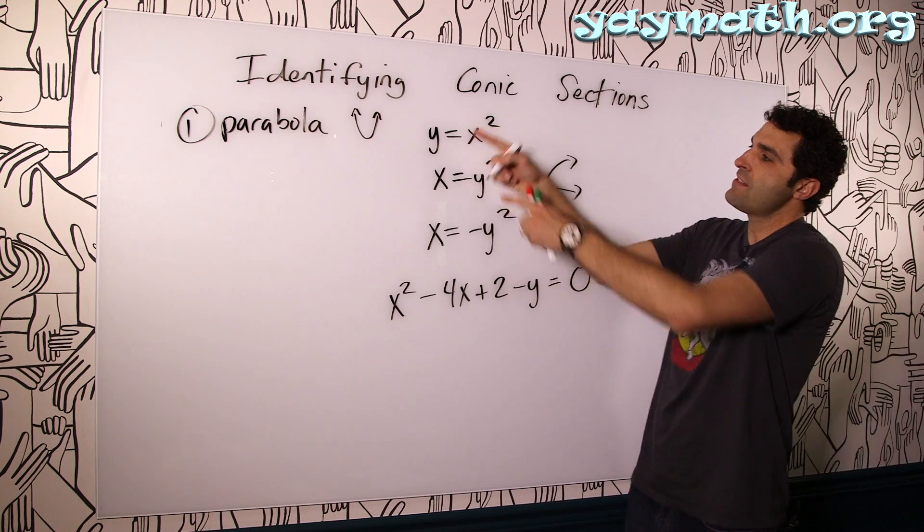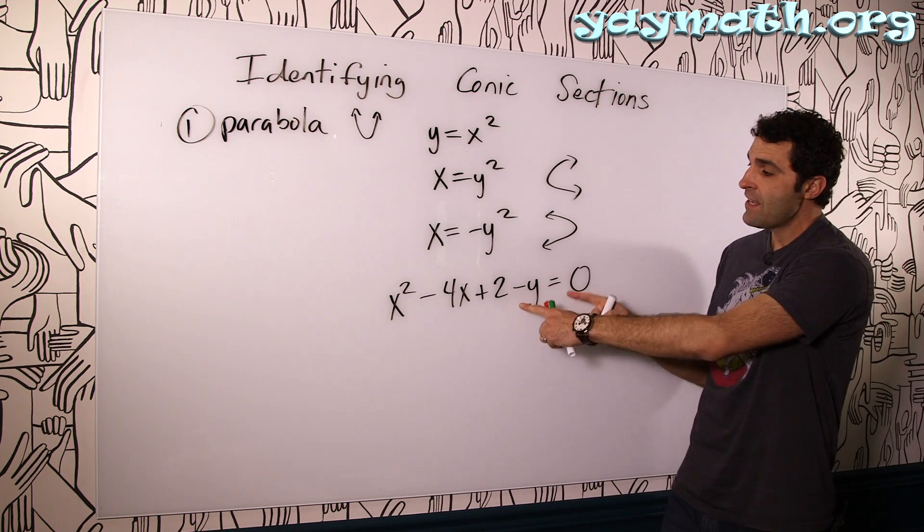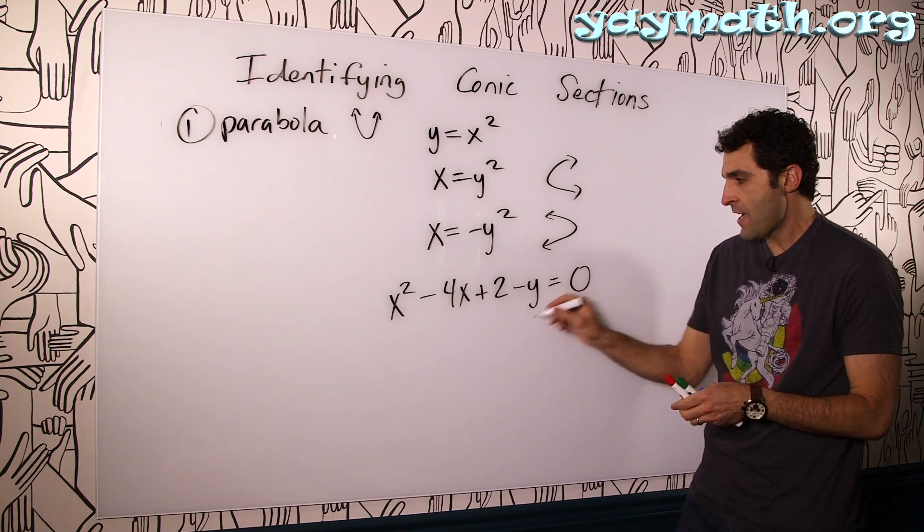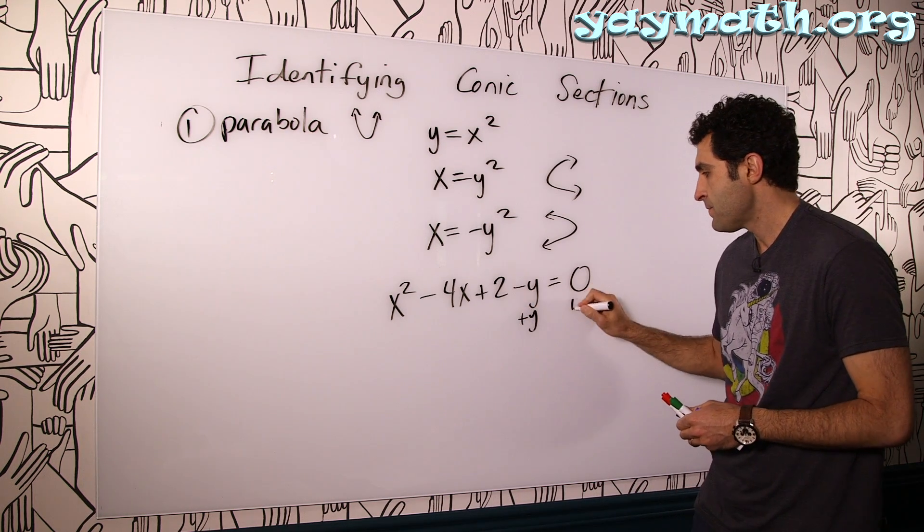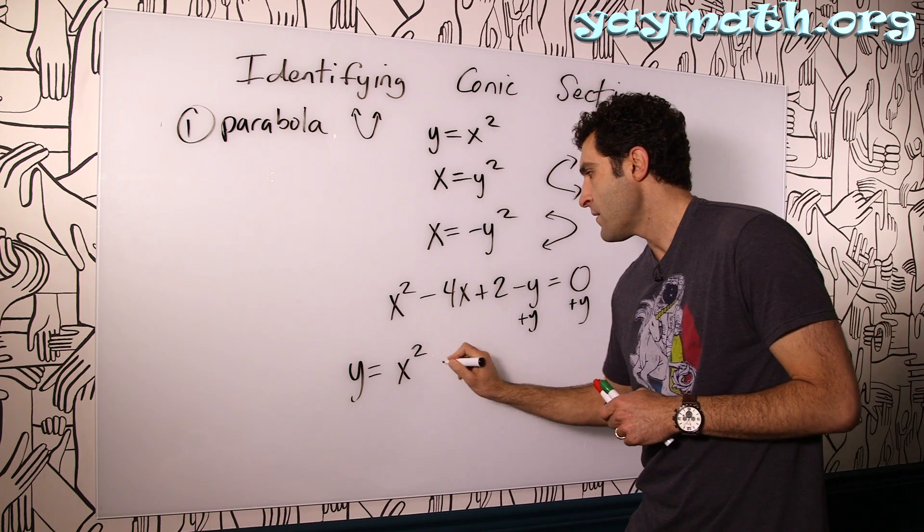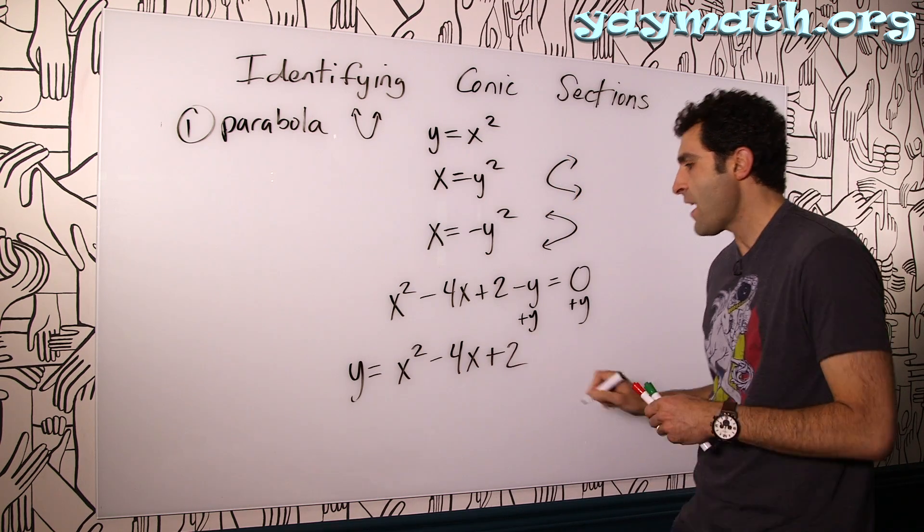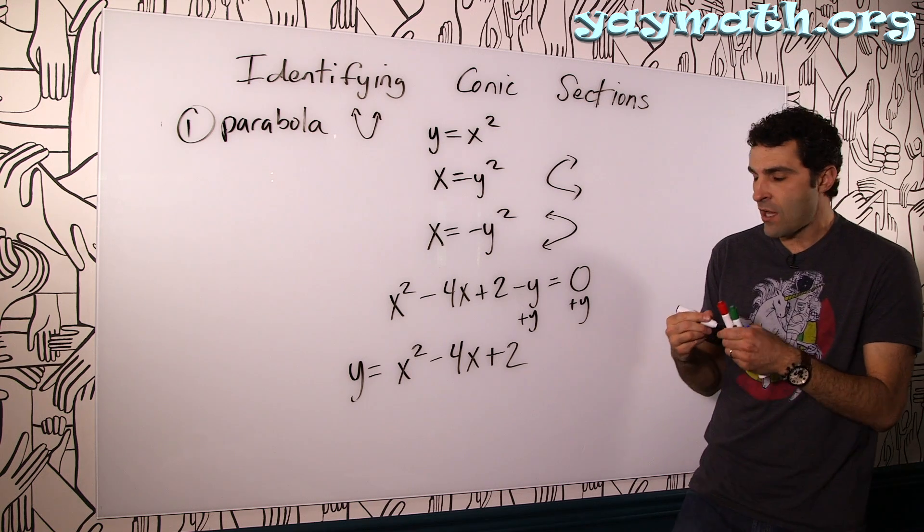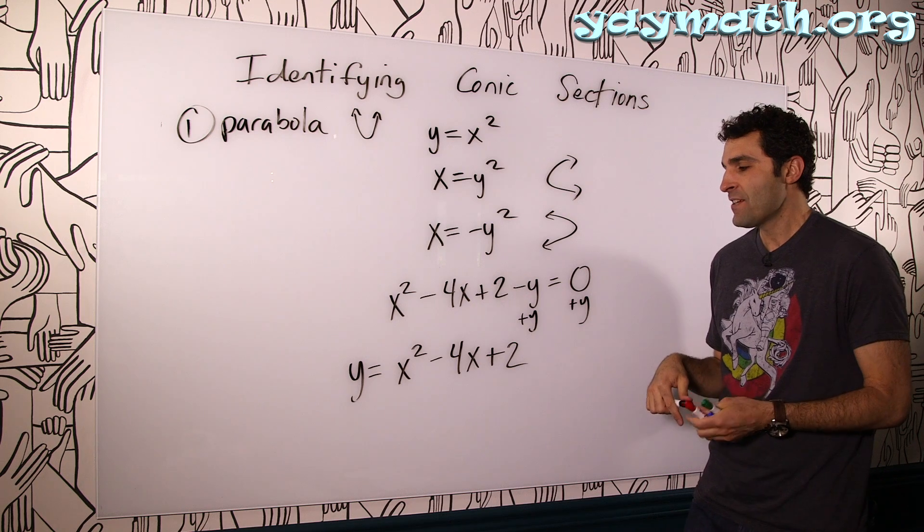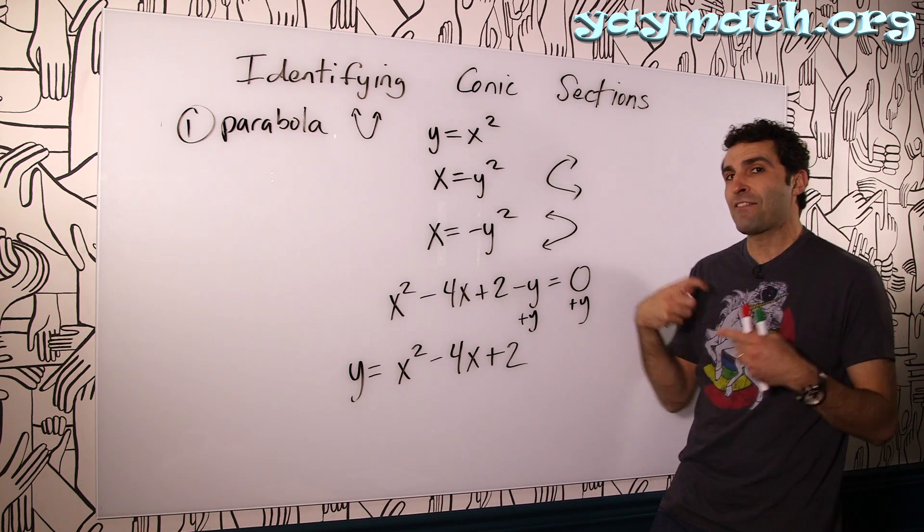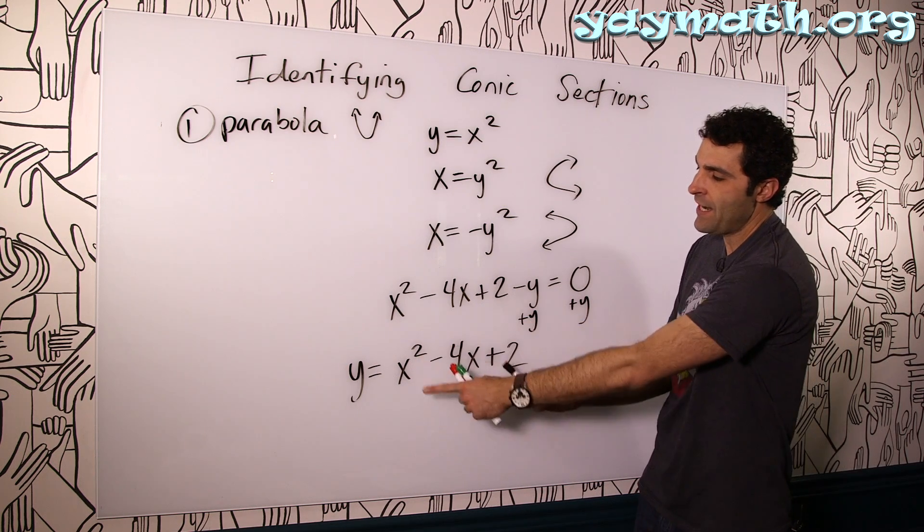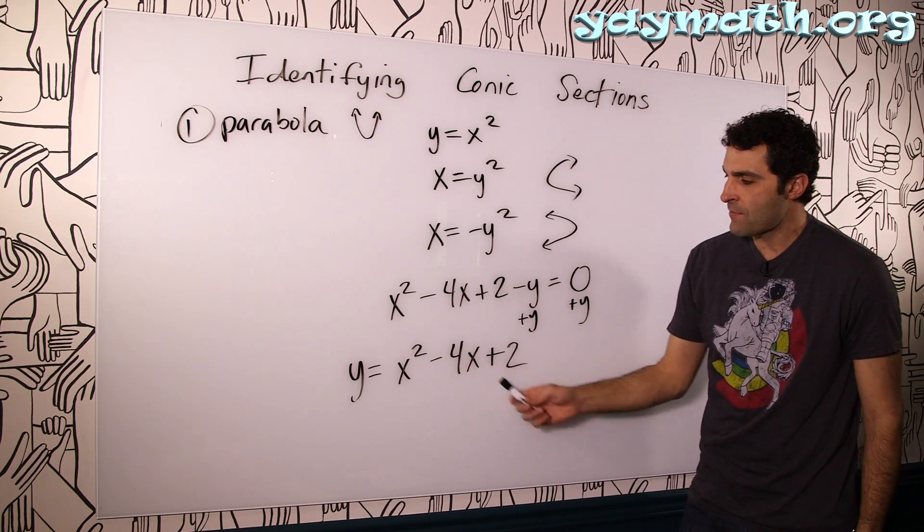So we're going to put it into this standard form in which one of the variables is isolated. In this case, the y needs to be the one that's isolated. So suppose we add y to both sides, bring it over here. I'm just going to write it on the left now. So you get y equals x squared minus four x plus two. So it's not in standard form, so get ready, hold on, saddle up. It's time for completing the square lifestyle.